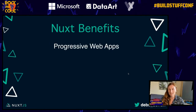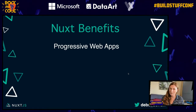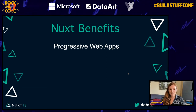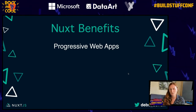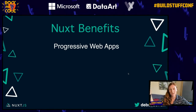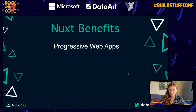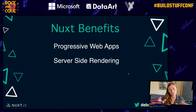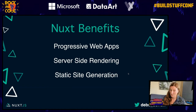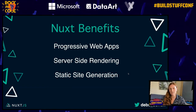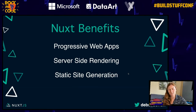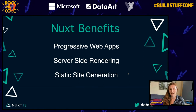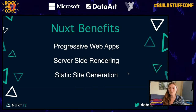Progressive web apps are one of my favorite features. With a module, you just install it and it creates the service worker file and generates all the icons for iPad, iPhone, Android, and everything. Server-side rendering is another benefit — Nuxt can do server-side rendering or static site generation, and you can switch with just one config change. You can start with server-side rendering and decide to go static, or just client-side rendering like a typical single-page application — just one command.